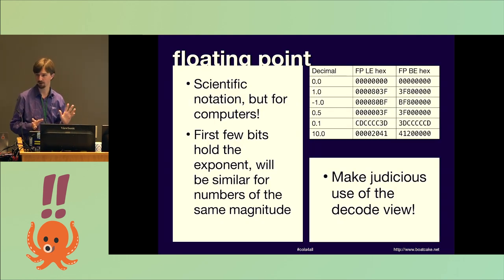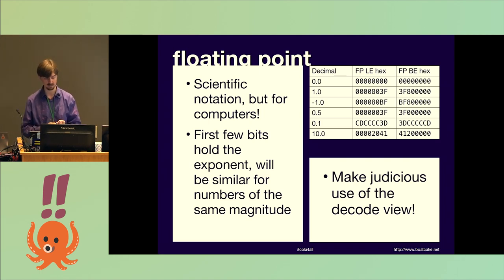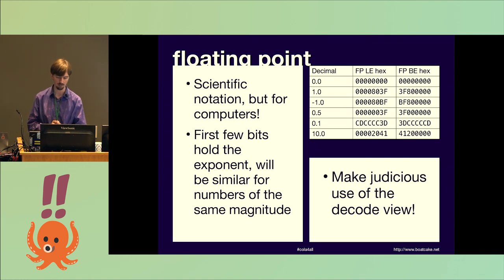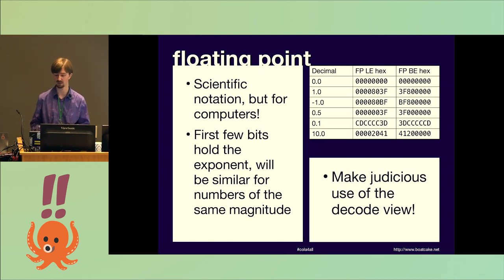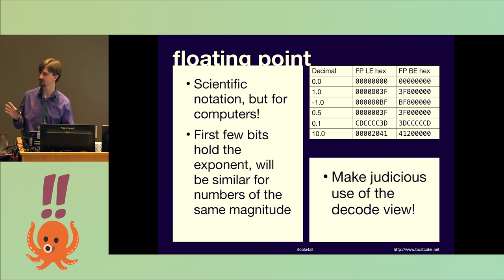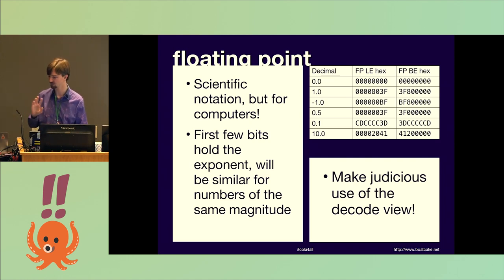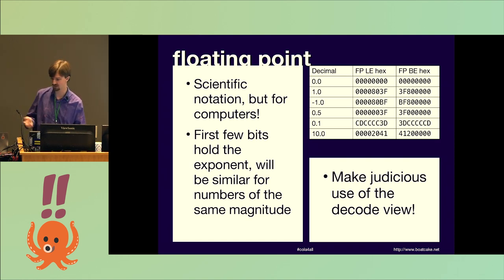Floating point is harder to read in hex view than integers, but two hints I can give you: one is to look out for 3F80 or 803F depending on endianness, because 1.0 is really, really common. As an extension of that, as humans we like to use human-sized numbers, so the exponent byte is going to be common for a lot of them. And if you pop into the decode view and you see something like 3 times 10 to the 38 or times 10 to the 200,000 — game developers don't normally need to count the number of cows under the sun, so values will usually be human-sized numbers.